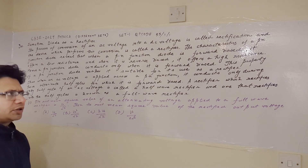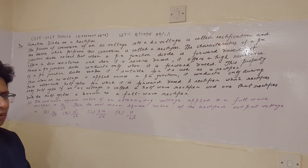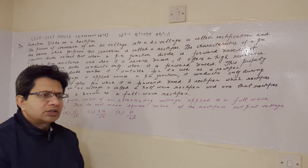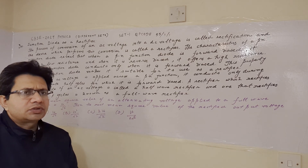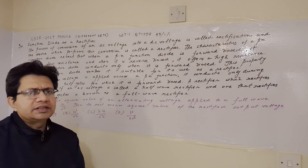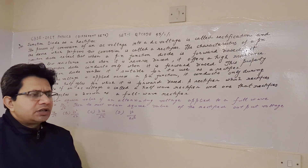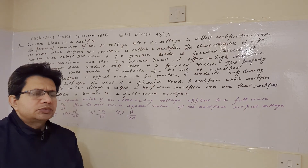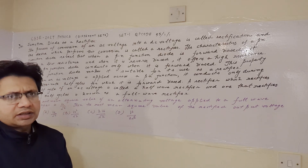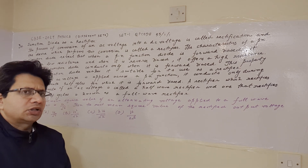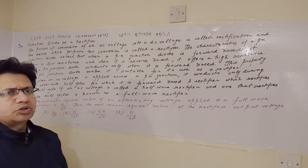The problem is based on the topic of the PN junction diode as a rectifier. The rectifier converts AC voltage to DC voltage; at the first step it converts the AC signal into a pulsating DC signal. A half wave rectifier conducts only during one half of the cycle and output is zero for the other half, whereas in a full wave rectifier we get the output in both cycles.